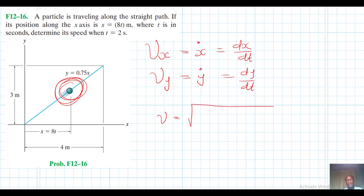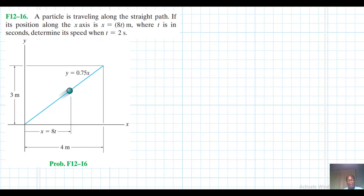This is the magnitude of velocity, speed, which is equal to the square root of vx squared plus vy squared. So this is what we intend to do. Right? Great. Alright.